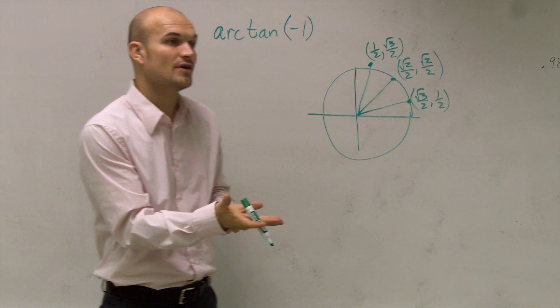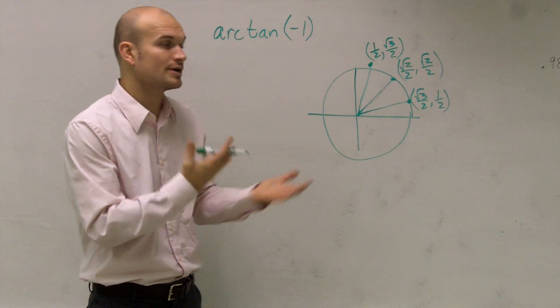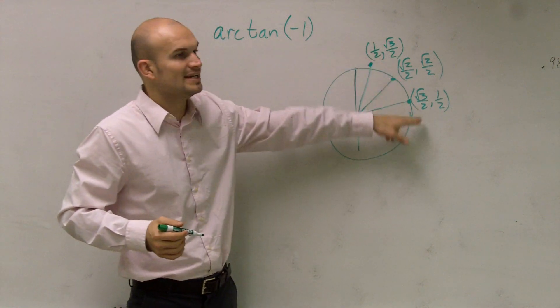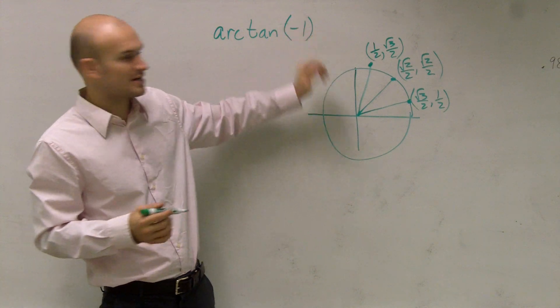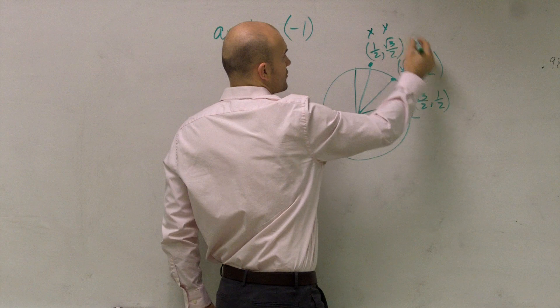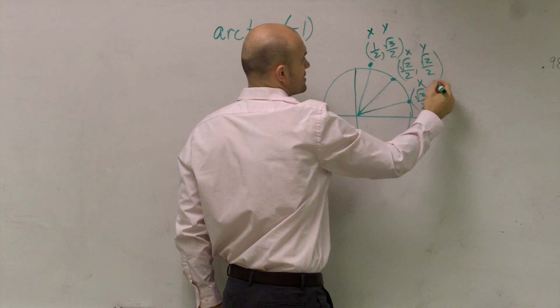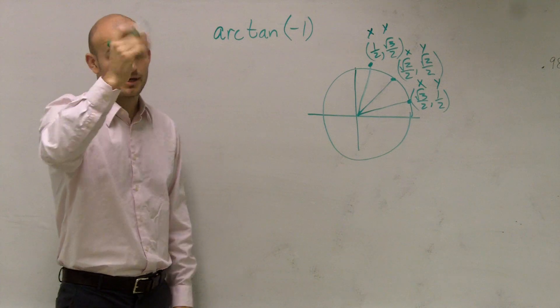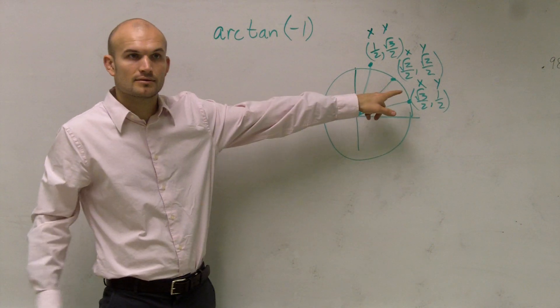Remember, the tangent function is going to be your y-coordinate over your x-coordinate, right? So which one of these is going to—let's forget about the negative 1 for a second. But which one of these, if I put my y-coordinate over my x-coordinate, is going to produce a 1? This coordinate, right? That one.